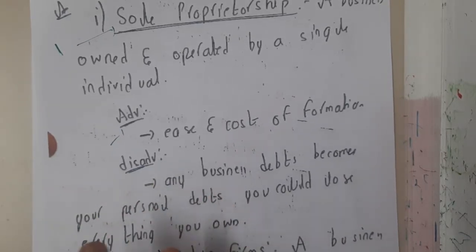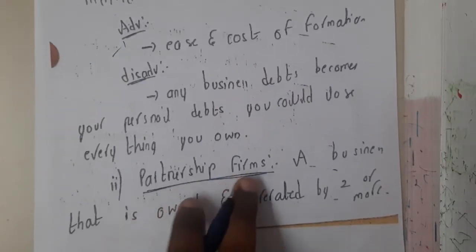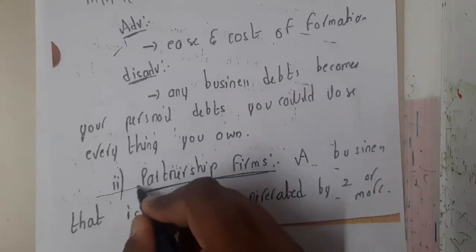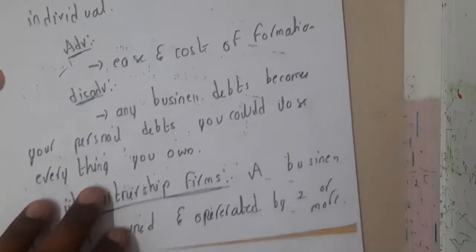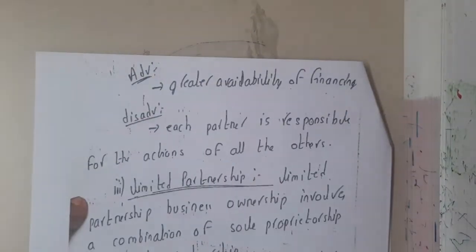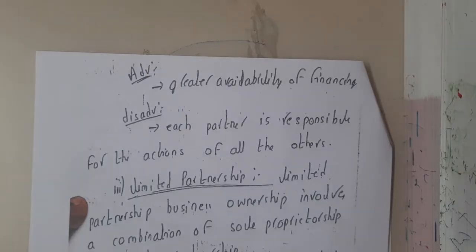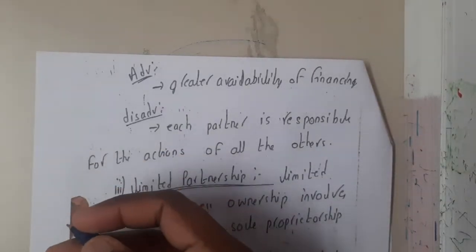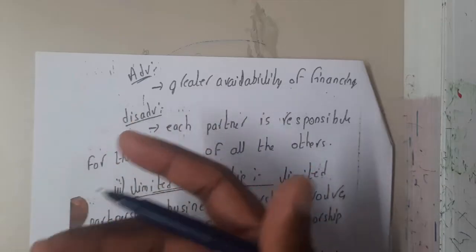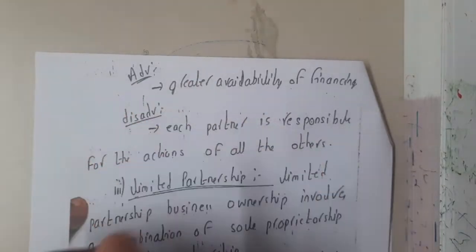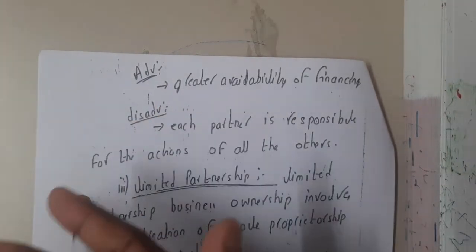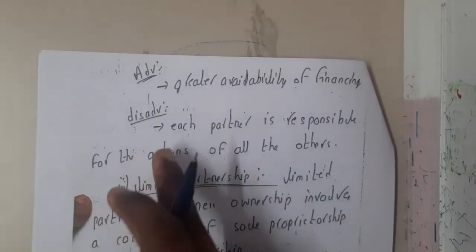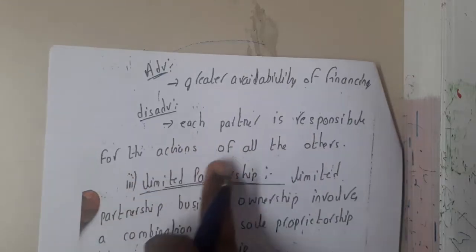Similarly, partnership firm — from this word you can say partnership means two or more. It is a business owned and operated by two or more members. The advantage here is greater availability of finance. For example, if the other partner is rich, he will be investing money and taking some shares, allowing the company to run normally.